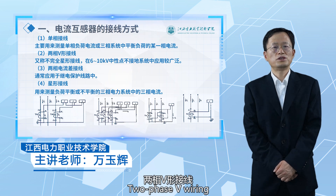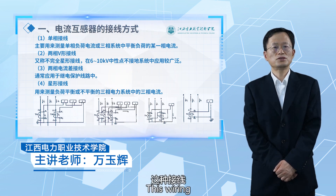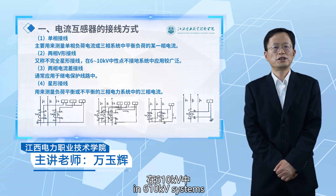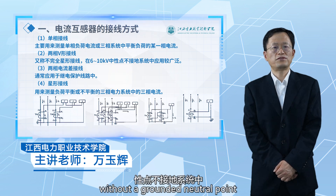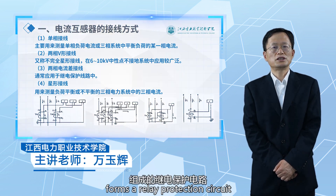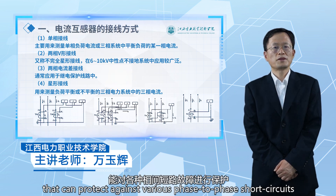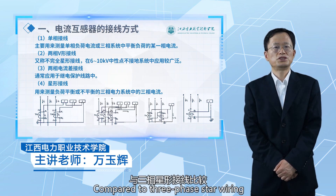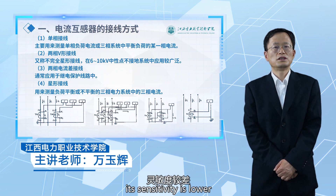The second is two-phase V wiring, also known as incomplete star wiring. In 6–10 kV systems without a grounded neutral point, it is widely used. The incomplete star wiring method forms a relay protection circuit that can protect against various phase-to-phase short circuits, but sensitivity varies with different fault types. Compared to three-phase star wiring, its sensitivity is lower.